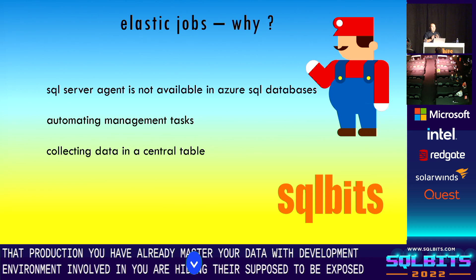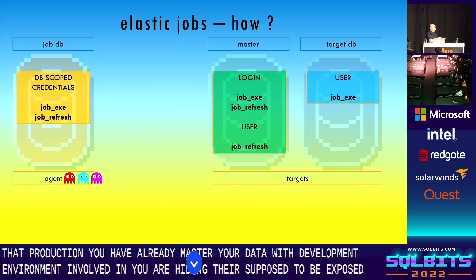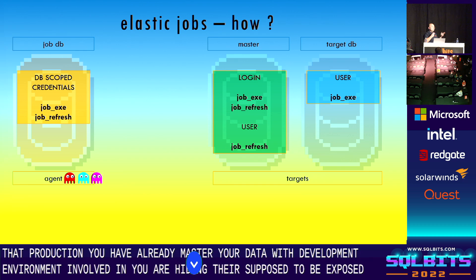Target groups are really flexible. Before we jump to the demo, one important thing: it all requires specific permissions. The job database and agent require database-scoped credentials, and there are two main credential types: job execution and job refresh.